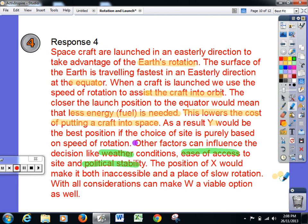The position of X would make it both inaccessible and a place of slow rotation. That's the point in Northern Europe. With all considerations, they can also have W as a viable option as well. But Y is definitely the best preferred option here. So this is a great response. A little bit more than is needed to answer the question, but a great response nevertheless.